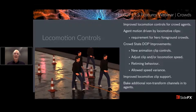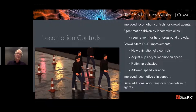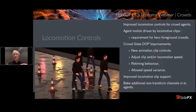Locomotion controls — we have requirements from studios for hero foreground crowds. DOPS does a good job, but for highly directed agents very close to the camera you want to take over. That's why we've done a lot of work with locomotion controls: improved locomotive clip support, the ability to provide your own locomotion to tightly direct characters, and baking additional non-transform channels into agents. There are many options — retiming behavior, allowed speed variance. And the new Agent CHOP: it opens up a whole new world for CHOPs. You can load in motion out of an agent or many agents, bake it out as channel data, and then do whatever you want to that data.